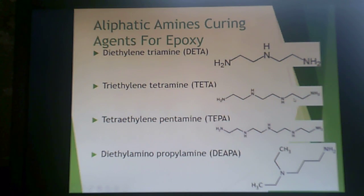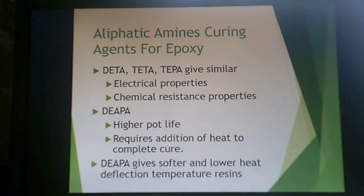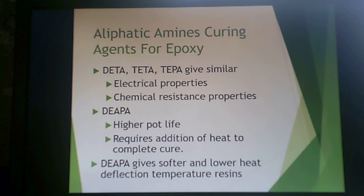Tetraethylene pentamine and diethylaminopropylamine are also aliphatic amines used for curing. All of these give similar electrical and chemical resistance properties. The last one listed gives a higher pot life but requires added heat to completely cure, and results in softer resins with lower heat deflection temperatures overall.